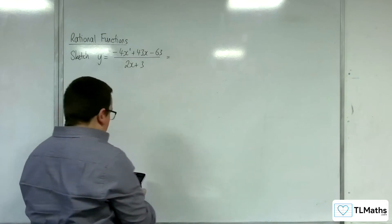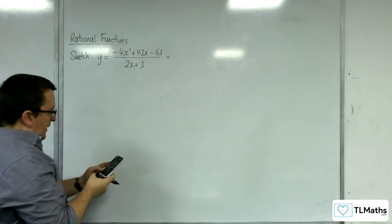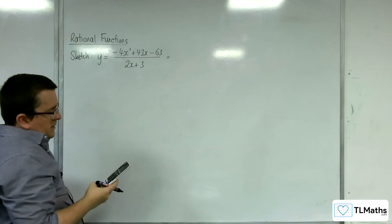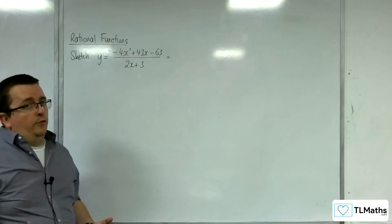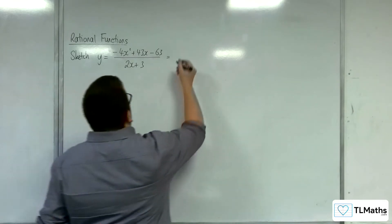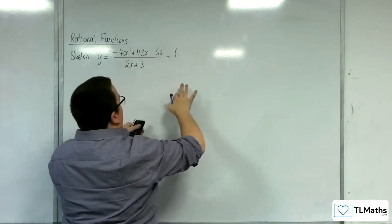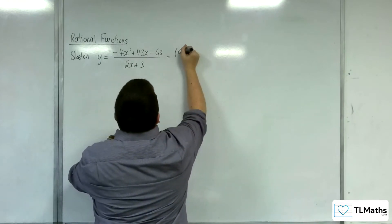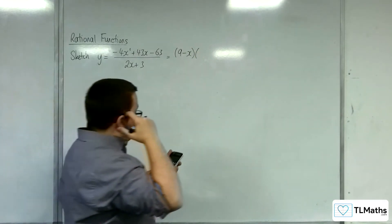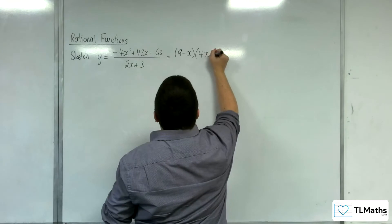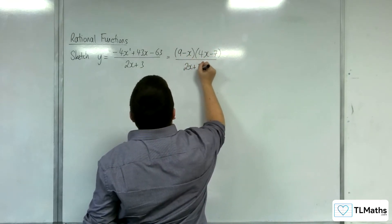Let's see what we get. So minus 4, 43, minus 63. We get 9. Now I need to take account of that minus 4x squared as well. So I can write that, rather than writing it as x take away 9, I'll write it as 9 take away x. And then we've got 7 quarters, so that'd be 4x take away 7 over the 2x plus 3.